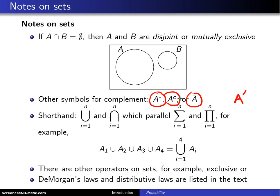Third, the shorthand for union and intersection, and these, by the way, parallel the summation and the product symbols. So for example, if you want to write A1 union A2 union A3 union A4 a little more compactly, you can say the union from I equals 1 to 4 of A sub i.